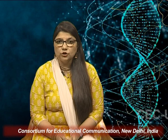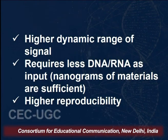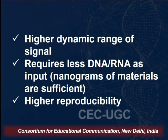NGS also has a higher dynamic range of signal. In Sanger sequencing, only certain fluorophores could be attached to the four nucleotides, limiting the detectable signal range. With NGS, a much higher dynamic range of signal can be produced. It also requires very little DNA or RNA as input — nanograms of material are sufficient — whereas Sanger sequencing requires a larger amount of input material. So wherever DNA extraction is challenging, next generation sequencing can still be employed.